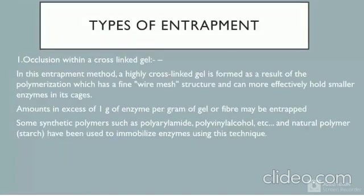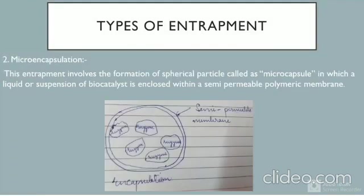Types of entrapment: first, occlusion within a cross-linked gel — a highly cross-linked gel is formed as a result of polymerization, creating a fine wire mesh structure that can hold smaller enzymes; amounts in excess of one gram of enzyme per gram of gel may be entrapped. Synthetic polymers such as polyacrylamide and polyvinyl alcohol, and natural polymers such as starch, have been used. The second type is microencapsulation — a widely used technique involving the formation of a spherical microcapsule in which a liquid or suspension of biocatalyst is enclosed within a semi-permeable polymeric membrane.